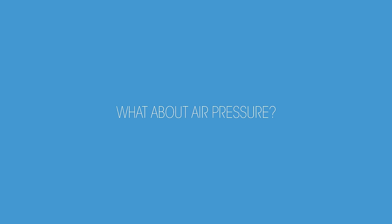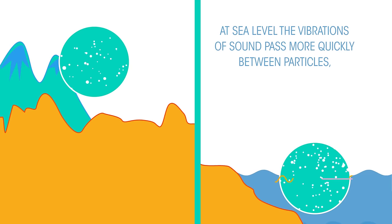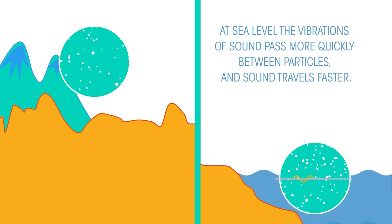But what about air pressure? At sea level, the air particles are more densely packed than at altitude. This means at sea level the vibrations of sound pass more quickly between particles and sound travels faster.